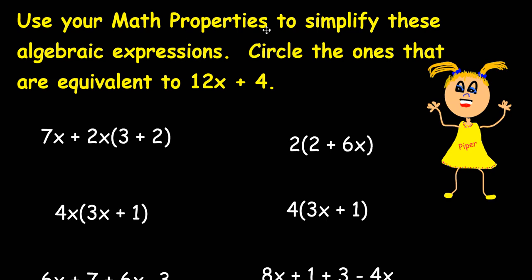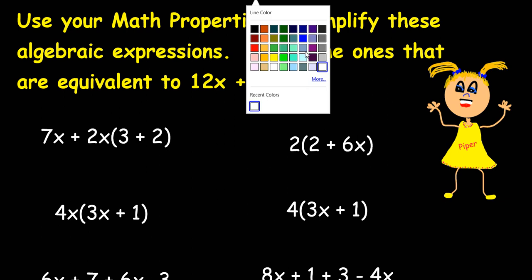Moving on, use your math properties to simplify these algebraic expressions. Circle the ones that are equivalent to 12x plus 4. Go ahead and solve each of the problems and then we'll check and see how you did. There's Piper again, whoa her hair almost fell off. Alright let's see how you did.